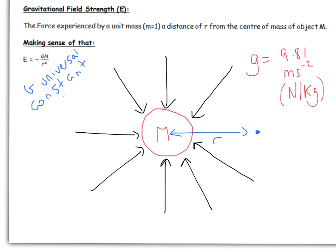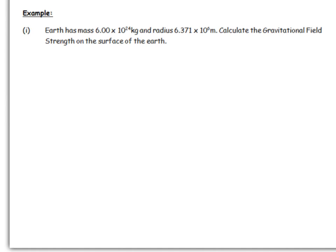So let's do some examples of these so you can see them at work. So we've got a question about field strength here. Earth has mass 6.00 times 10 to the 24 kg, and a radius of 6.371 times 10 to the 6 meters. So find the gravitational field strength on the surface of Earth. Now, first of all, when you're doing these questions, it's only ever interested in the magnitude.